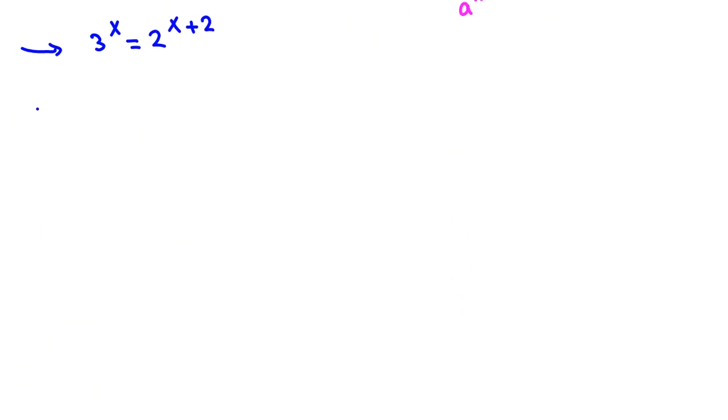We take log from both sides because x is in the power. Log 3 to the x equals log 2 to the x plus 2. Now, by logarithm rules, when we have something to the power of something, you can take m in front of logarithm: m log a.